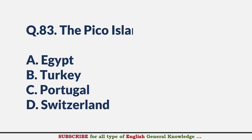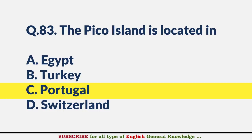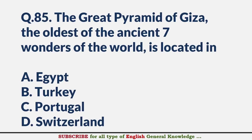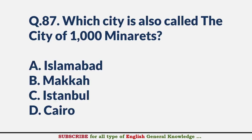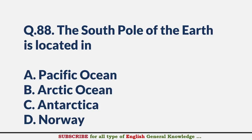The Pico Island is located in — Answer C: Portugal. The Great Pyramid of Giza, the oldest of the Seven Wonders of the World, is located in — Answer A: Egypt. Which city is also called the City of 1000 Minarets? — Answer D: Cairo. The South Pole of the earth is located in — Answer C: Antarctica.